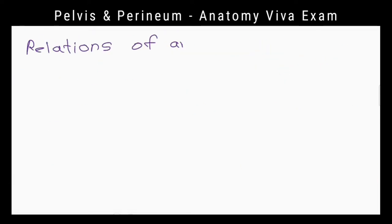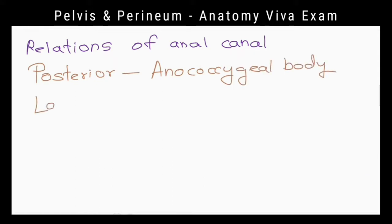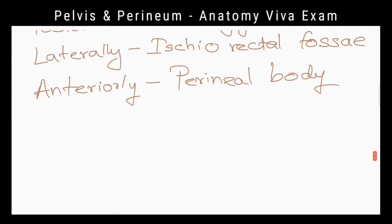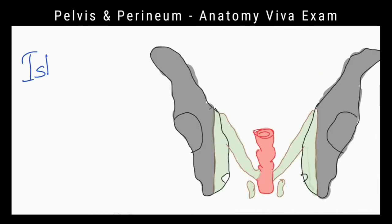What are the relations of anal canal? Posteriorly anococcygeal body, laterally ischioanal fossa, anteriorly perineal body. What are the boundaries of ischioanal fossa?